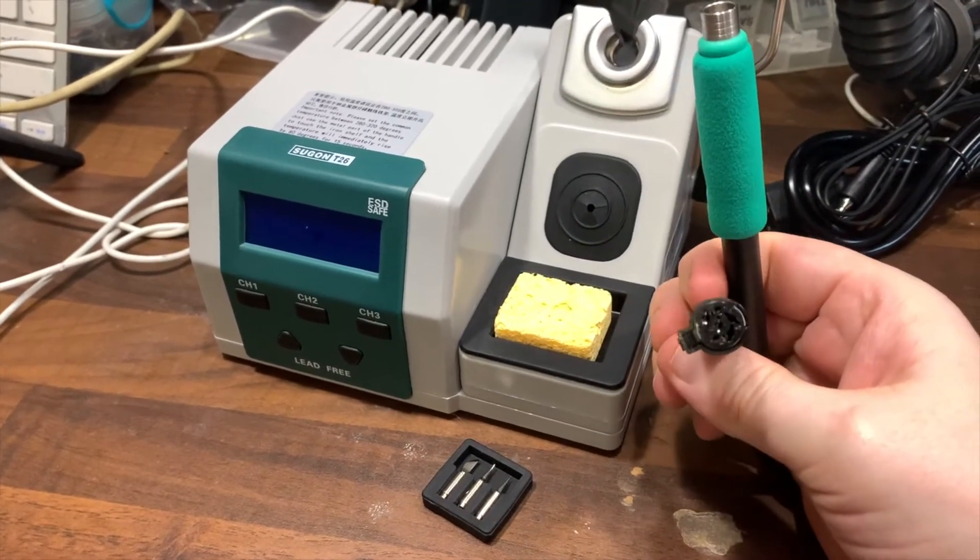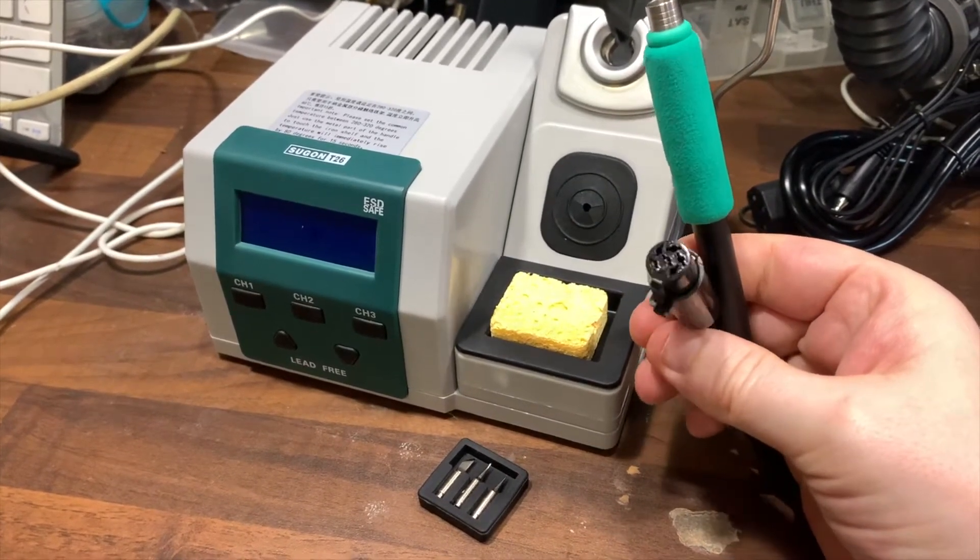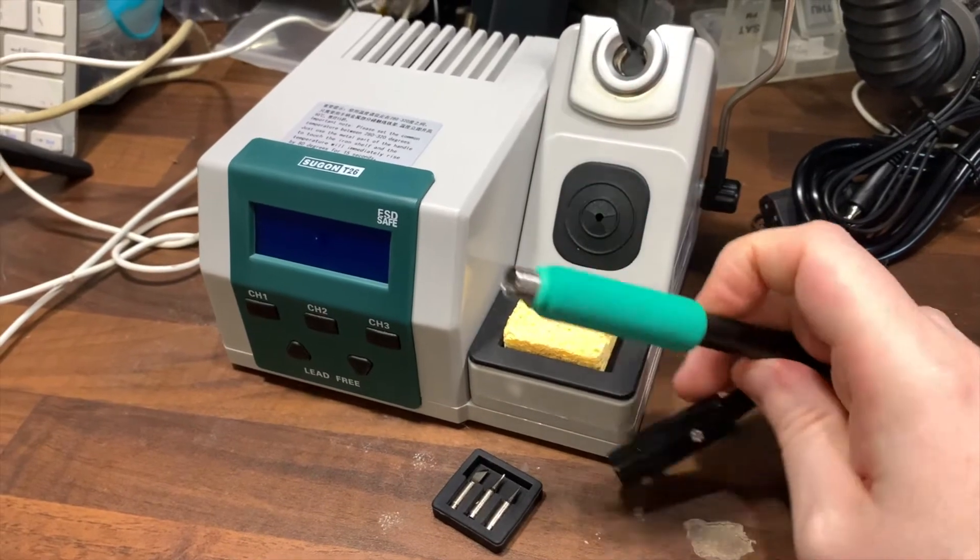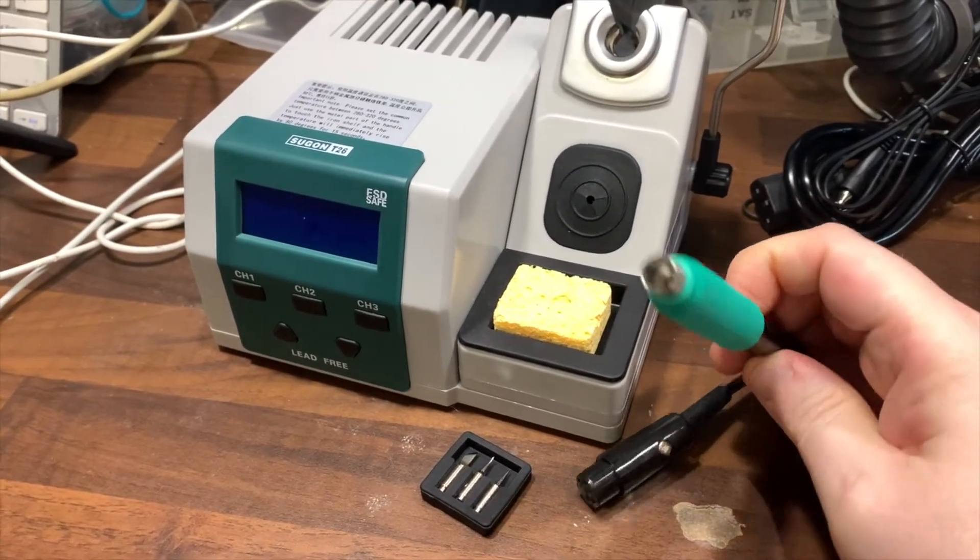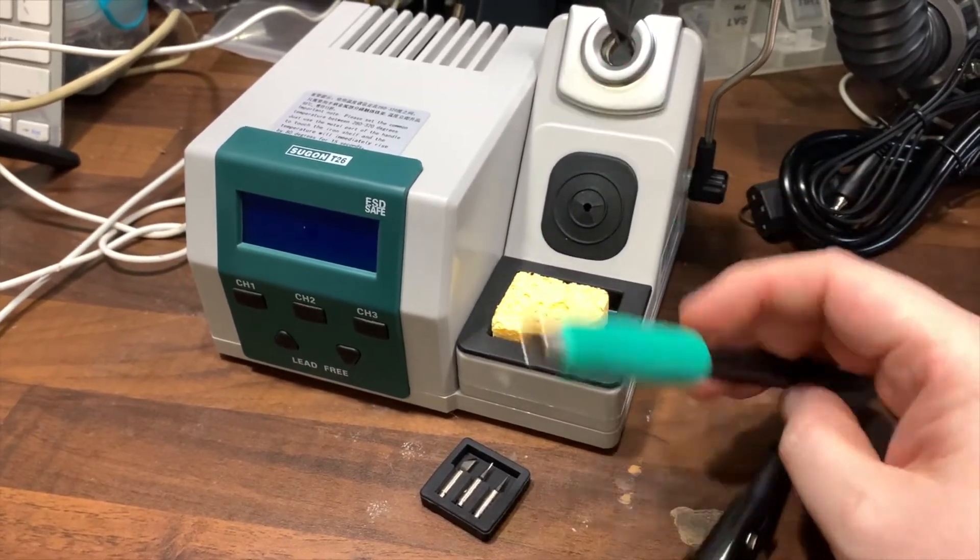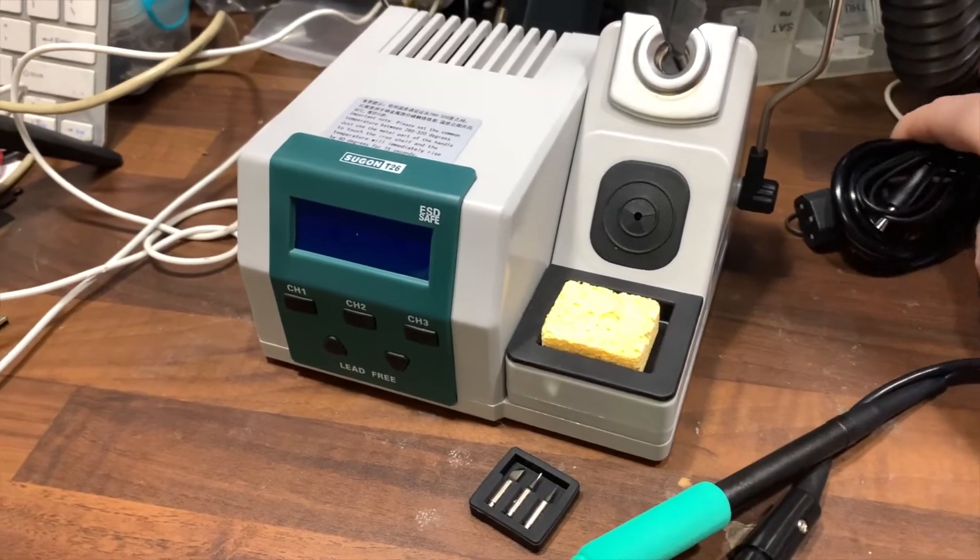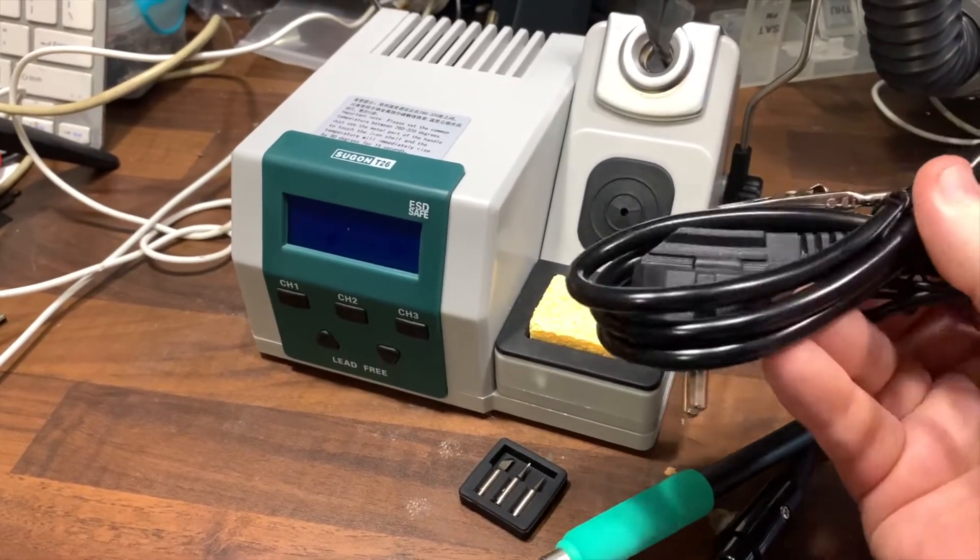This should allow me to use JBC tips on this station. And this station only cost $95 which is about 80 UK pounds, which is nothing. You can buy about four of these for the price of the JBC.